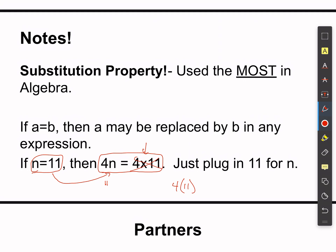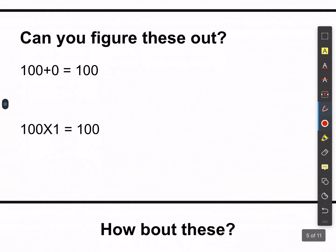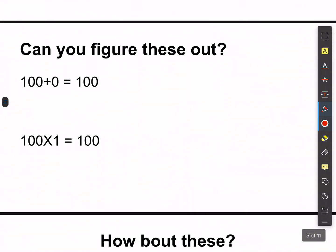We're going to skip the partner exercise for now. Can you figure these out? This is a no-brainer: 100 plus 0 equals 100. Since the original value 100 does not change when I add 0 to it, I call this the identity property.